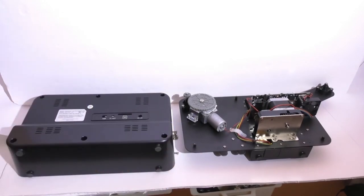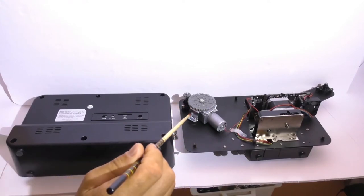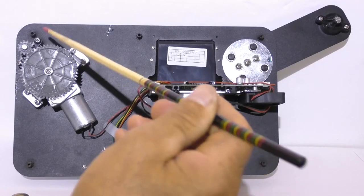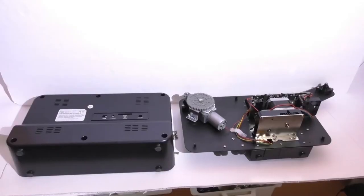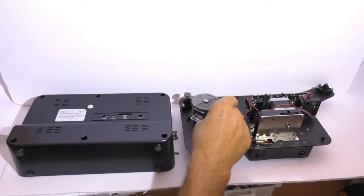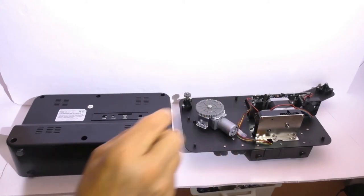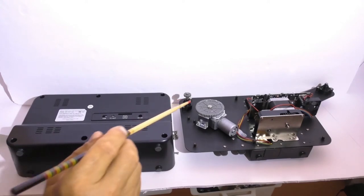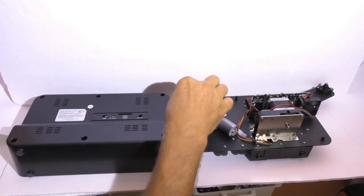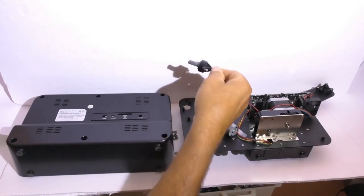There are going to be six more screws we're going to remove. I've already loosened them because you don't need to see me unscrew a bunch of screws, but there's one, two, three, four, five, six. Once those screws are removed just move this out of the way. You don't have to disconnect any wires whatsoever. You don't have to worry about how these gears lined up. Then pull this clutch out.